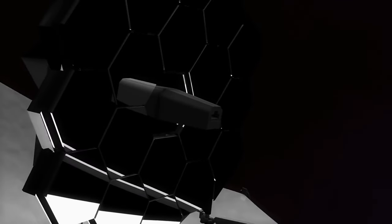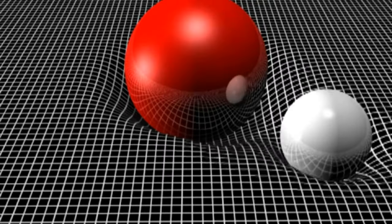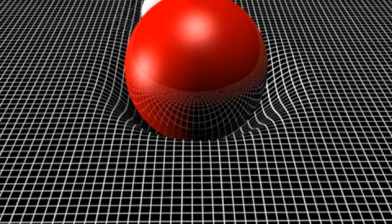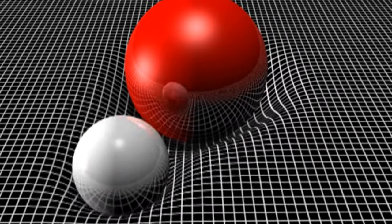But JWST didn't stop there. It also turned its attention to Pandora's Cluster, a region of space previously studied by the Hubble Space Telescope. Using Einstein's theory of general relativity, JWST's infrared instruments exposed hidden secrets in this cluster, located 3.5 billion light-years away.